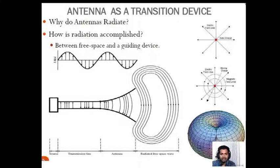The complete radiation part has a source part, transmission lines, antennas, and the last part is the radiated free space wave.